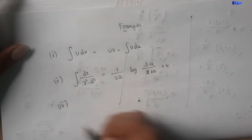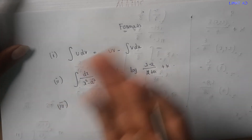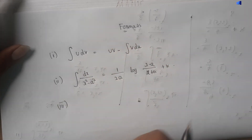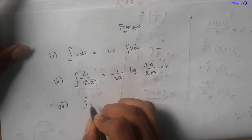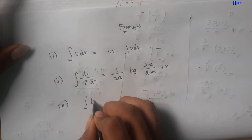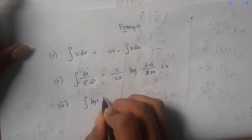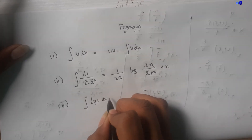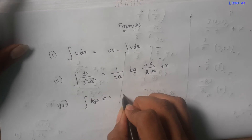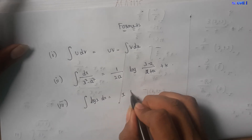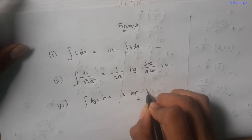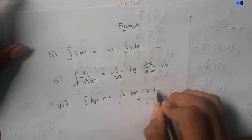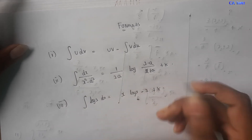The third formula is the integral of log x. So: integral of log x dx equals x·log x minus x plus k. This formula should be known.